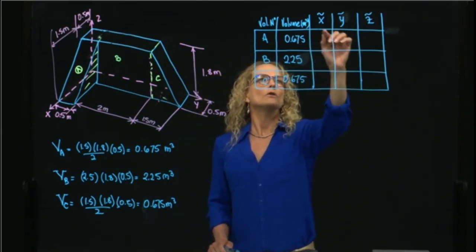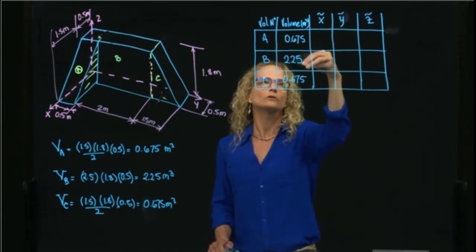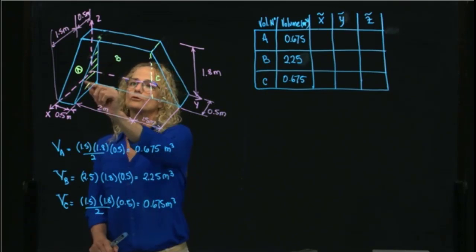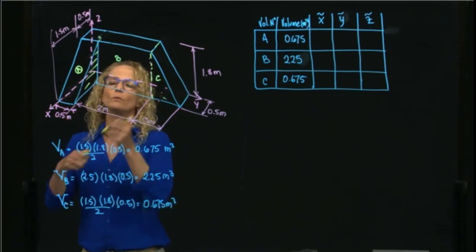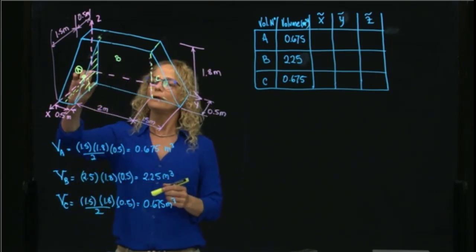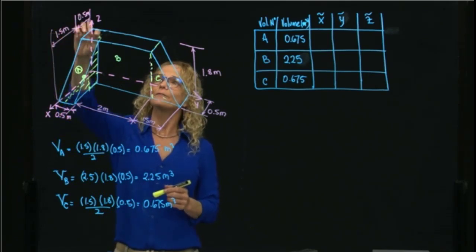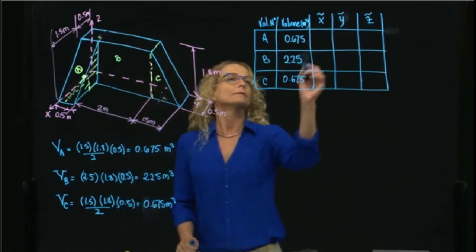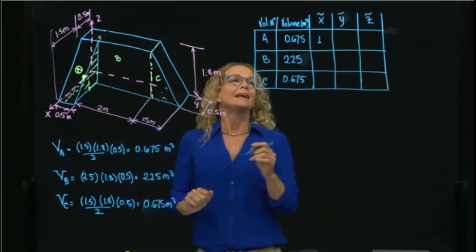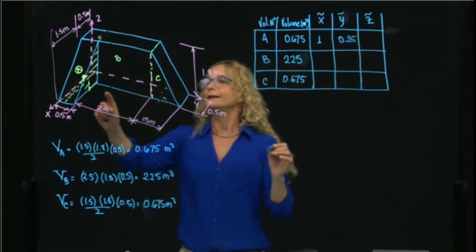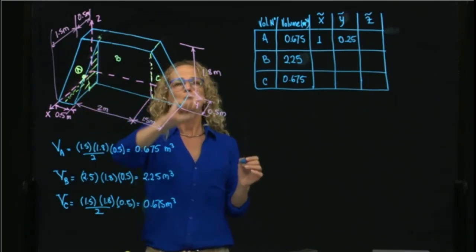Now we find the local centroid of each figure. For triangle A, the centroid is at one-third of the base, one-third of the height, and the middle of the depth. For X, it is one-third of 1.5, which is 0.5, but I add 0.5 to measure from the origin, giving X = 1. For Y, it is in the middle of the depth: 0.25. For Z, it is one-third of 1.8, which is 0.6.